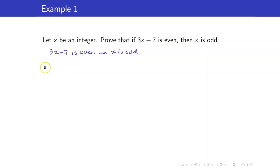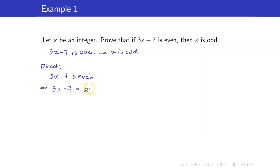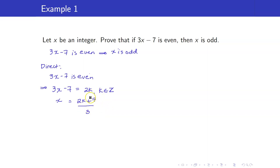This is just a scratch if you proceed by direct proof. 3X minus 7 is even would mean that 3X minus 7 is equal to 2K for some integer K. But then you want to show that X is odd, so you would solve for X here. When you solve for X, you would get 2K plus 7 all over 3, and this does not even seem to be an integer.